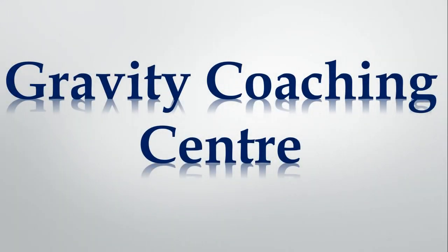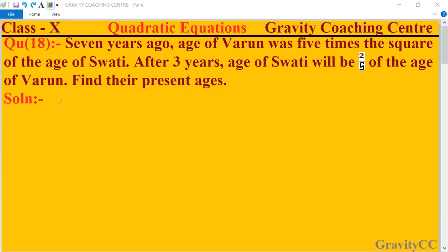Welcome to our channel Gravity Coaching Center. Class 10, Chapter: Quadratic Equations, Question number 18. Seven years ago, the age of Varun was five times the square of the age of Swathi, and after three years, the age of Swathi will be two-fifths of the age of Varun. Find their present age.